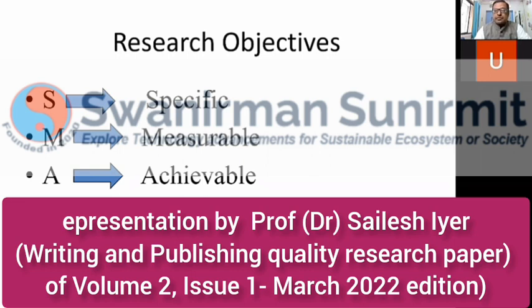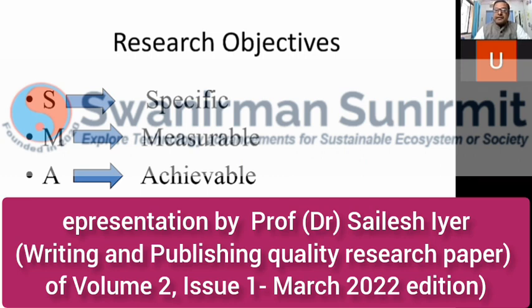Too broad objectives may lead to your research being extended for a long duration. Whenever your work is being evaluated for submitting the thesis, one of the key parameters checked is whether the objectives have been met. If your objectives are too many, you will not be able to complete them within a specific time period. So specific is the first criterion. Then objectives should be Measurable — there should be a clear distinction on how you would measure them, in some units or parameters.